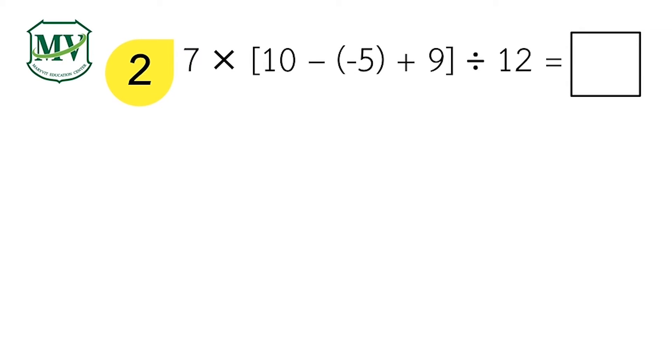Next, question No. 2. 7 times the quantity of 10 minus negative 5 plus 9 all over 12. Can you help me solve this problem? Let's check your answer.